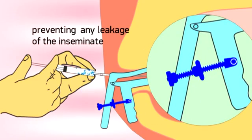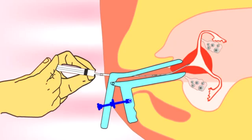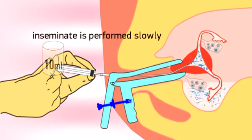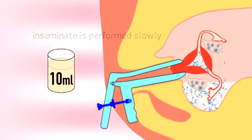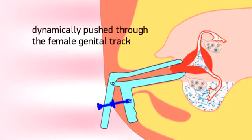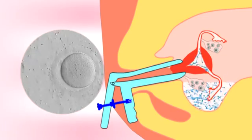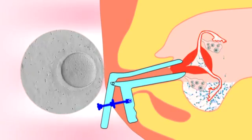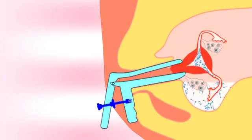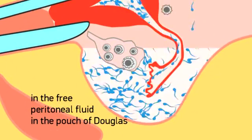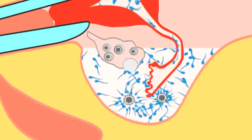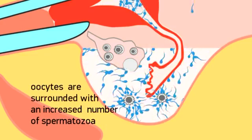Preventing any leakage of the inseminate, with the cervix securely clamped, intrauterine tuboperitoneal insemination of 10 ml of inseminate is performed slowly. In this way, spermatozoa are dynamically pushed through the female genital tract to meet the oocytes, in contrast to standard IUI during which spermatozoa are passively inseminated in the uterine cavity. As a result, in the free peritoneal fluid in the pouch of Douglas present due to ovulation, oocytes are surrounded with an increased number of spermatozoa resulting in higher pregnancy rates.